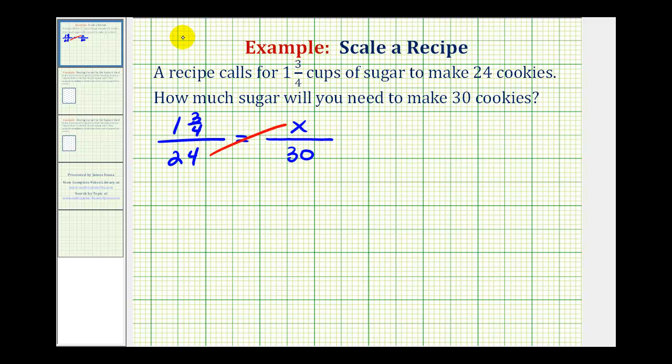So twenty-four times x or twenty-four x must equal one and three fourths times thirty.